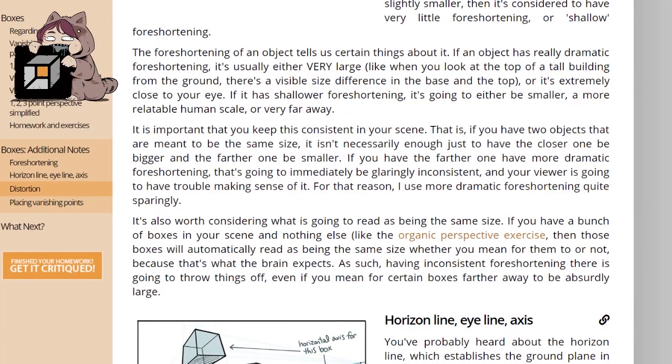The foreshortening of an object tells us certain things about it. If an object has really dramatic foreshortening, it's usually either very large, like when you look at the top of a tall building from the ground, there's a visible size difference in the base and the top, or it's extremely close to your eye. If it has shallower foreshortening, it's going to either be smaller, a more relatable human scale, or very far away.